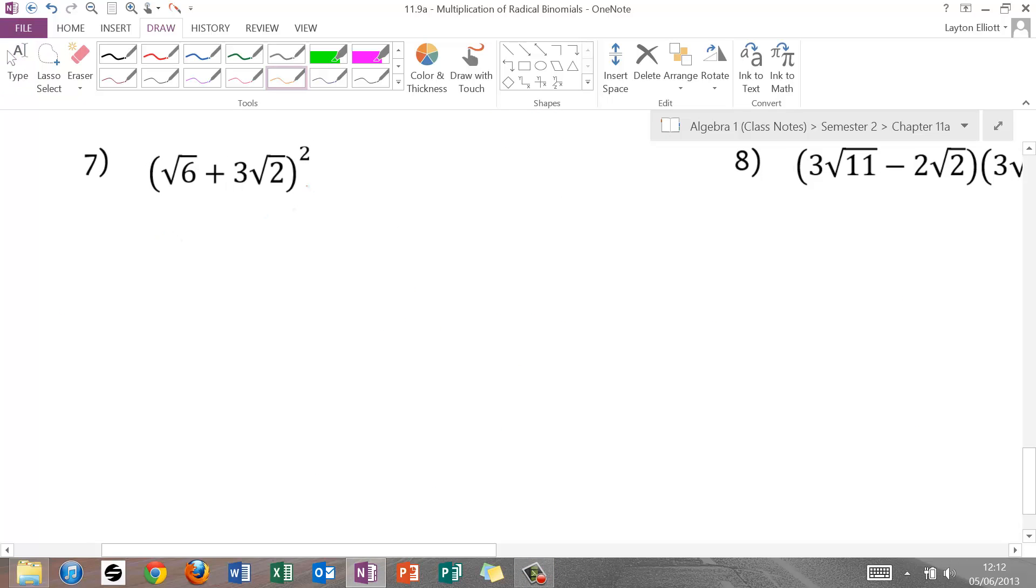So now we square this binomial. Let's see if we can do this without writing it by itself. Radical 6 times radical 6 is 6. Plus, then we have 2 times, this would be 2 times 3. Radical 6 times 2. Or radical 3 times 2 times 2. Since I always factor them out inside. Plus, 3 squared is 9. Radical 2 squared is 4. 6 plus 36. Those are our 2-like terms. It's 42. Plus. Then these 2s come out as a single 2. 2 times 2 times 3 is 12. Leaving behind radical 3.